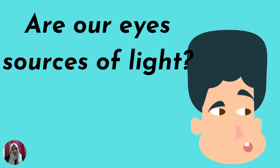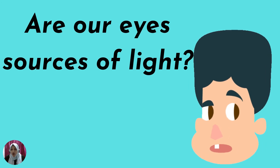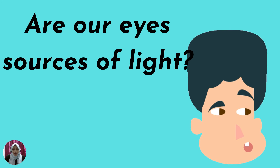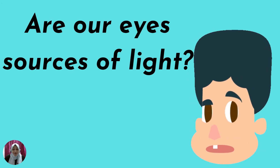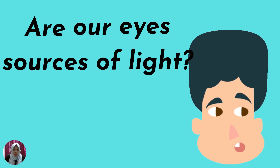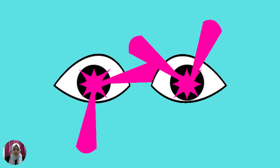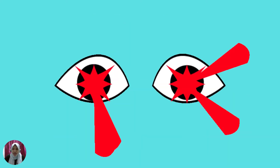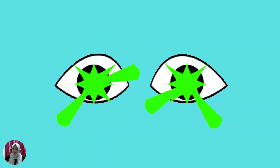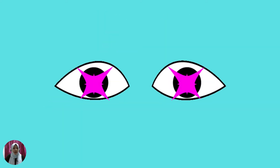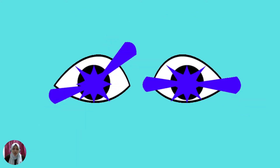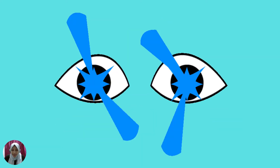Are your eyes a source of light? Think. If you say yes, it means that there is light coming out of your eyes. Is it true? Do you see any light coming out of our eyes? No. So our eyes are not a source of light.